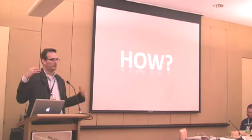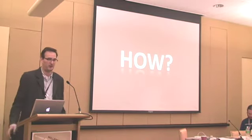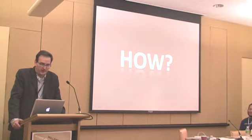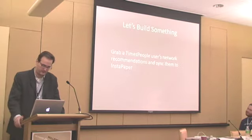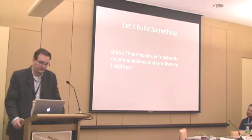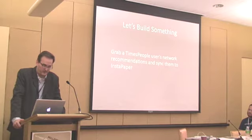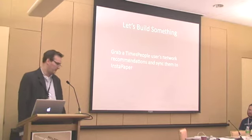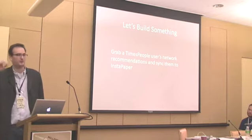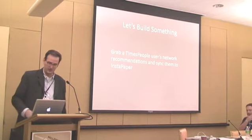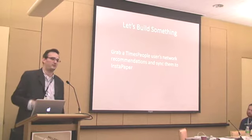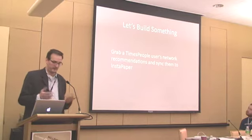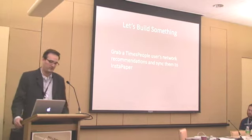Now we get to how — you've seen what people can do with the APIs. We want to build something. We're going to walk through a sample app. The idea is to use Times People, which is our social layer, and Instapaper, and mix the two. Ultimately I want to get my friends' recommendations on my iPhone — for when you go underground on the subway and don't have connectivity, you can have offline reading material.